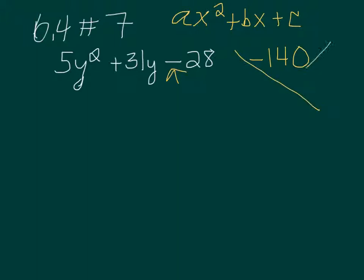So you can make this little x thing. And what we're trying to do is find two numbers that multiply to be negative 140, but add up to be 31.